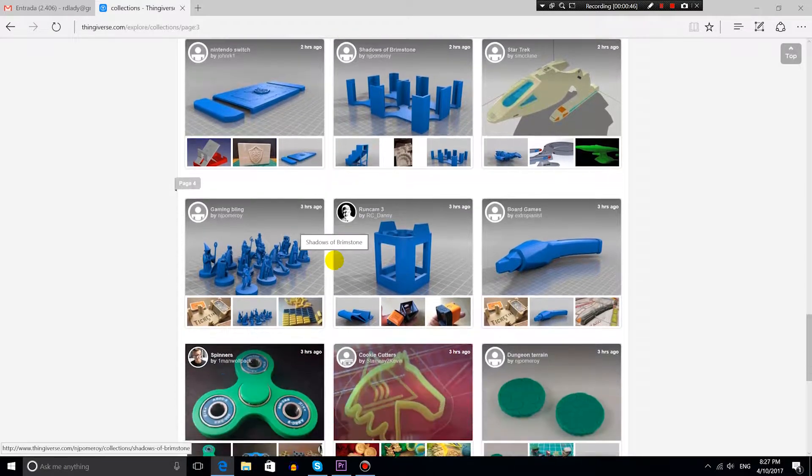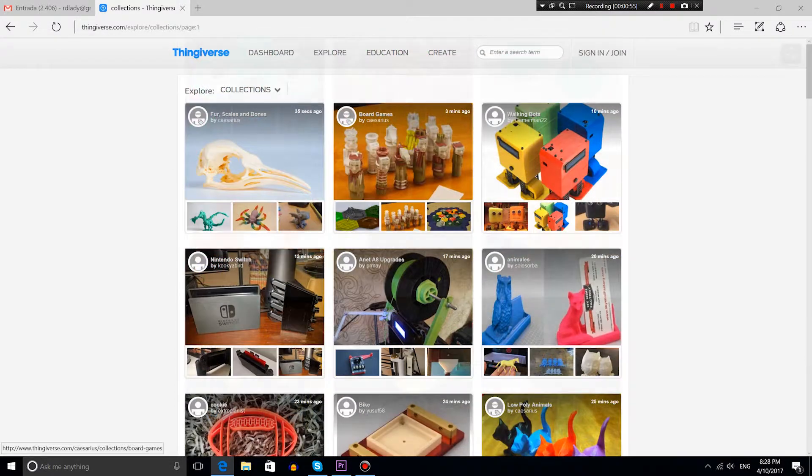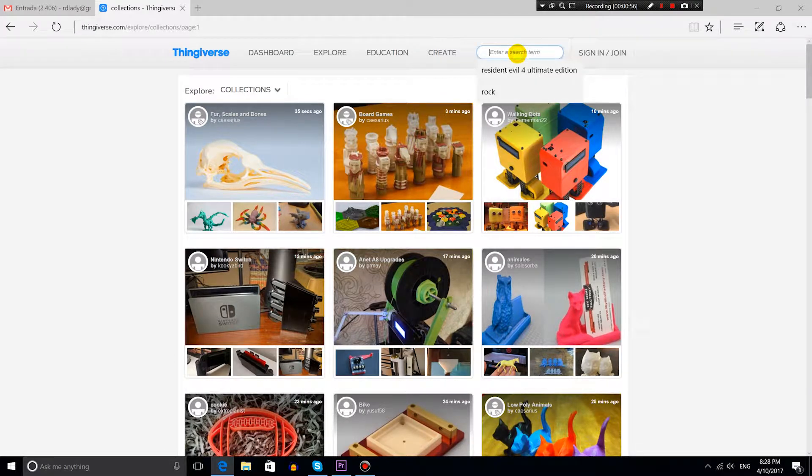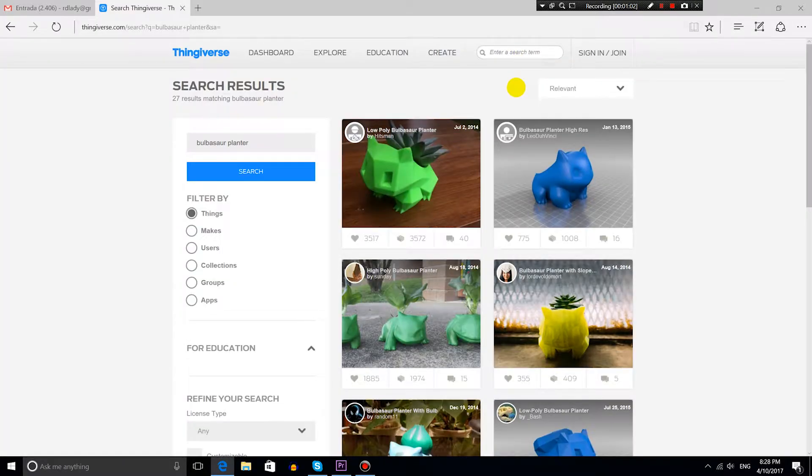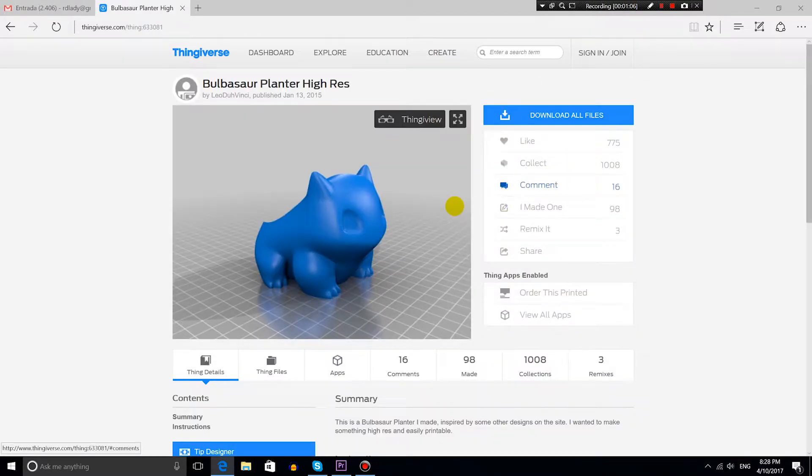So this is what I did for 3D printing the Bulbasaur statue. I went to Thingiverse website and searched for a Bulbasaur planter, which is a Bulbasaur statue, but in its back it has an empty space where we can put any actual plant. So we can use this statue as a planter as well.